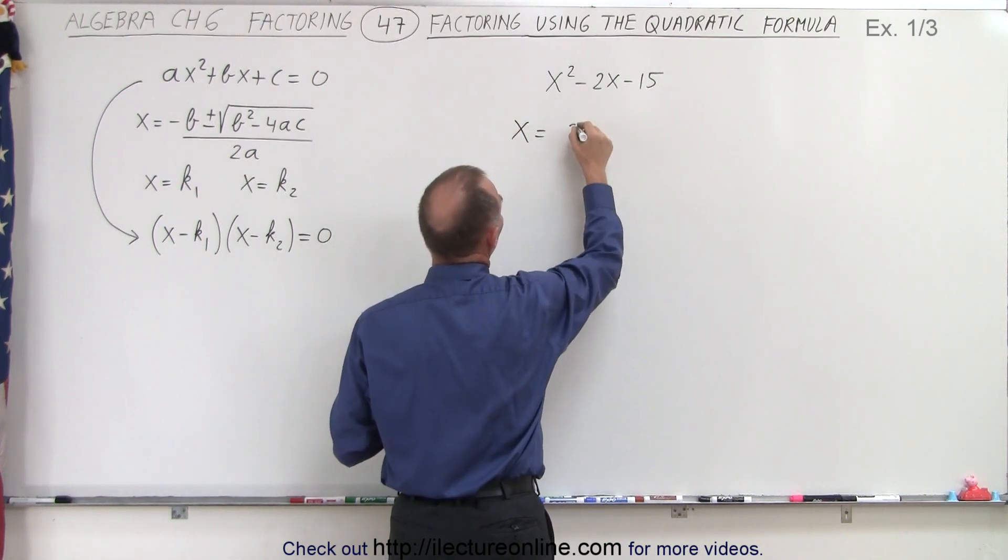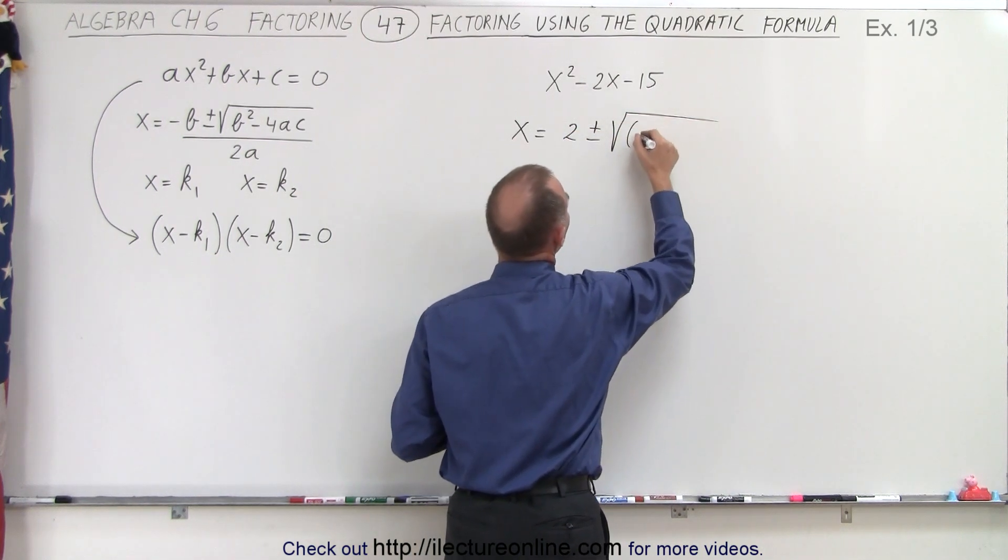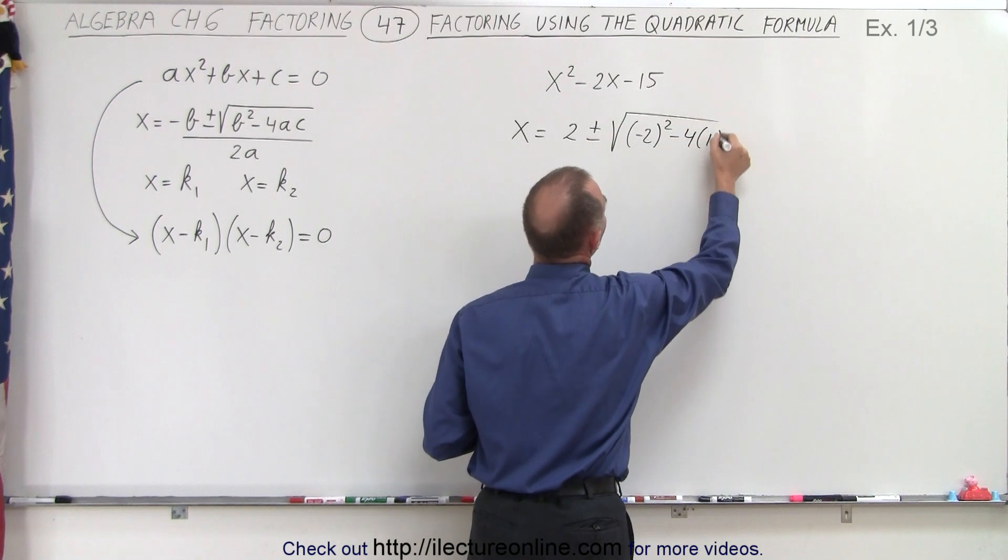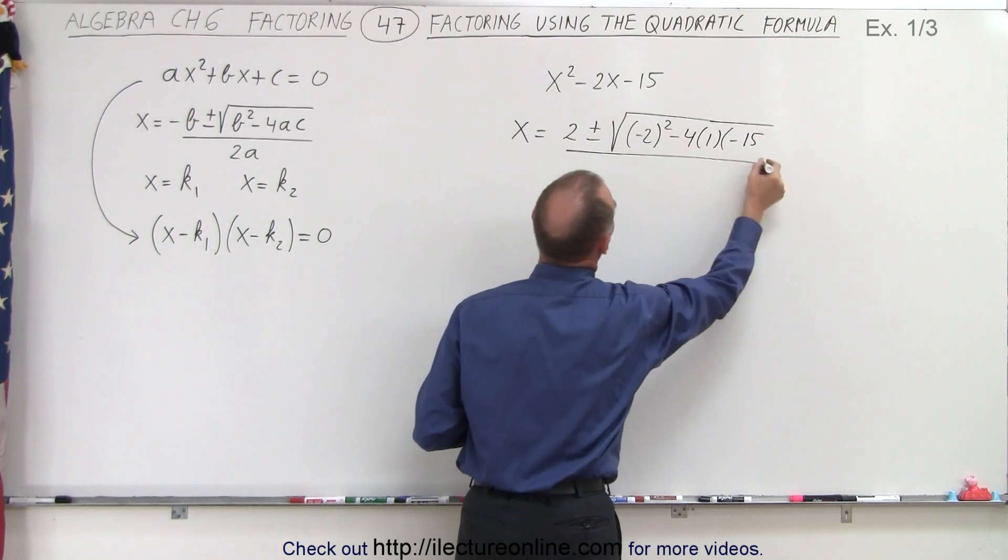minus a -2 is a positive 2, plus or minus the square root of b², so that's (-2)², minus 4 times a times c, which is a -15, all divided by 2a.